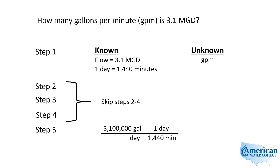We know that one day is 1440 minutes. Notice when we go this way, the 1440 is on the bottom — it was on the top in the last problem — simply because we're dealing with days instead of minutes. The days cancel out, and now we have gallons per minute.